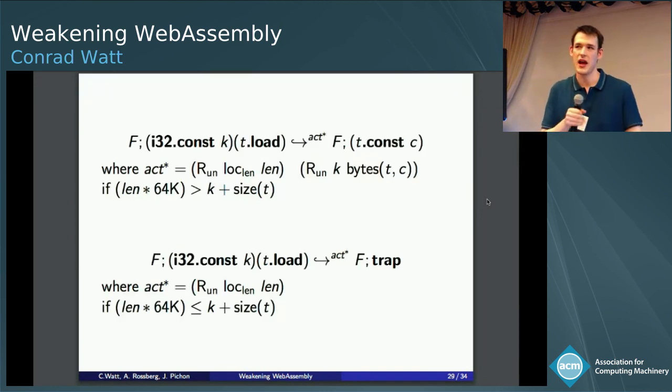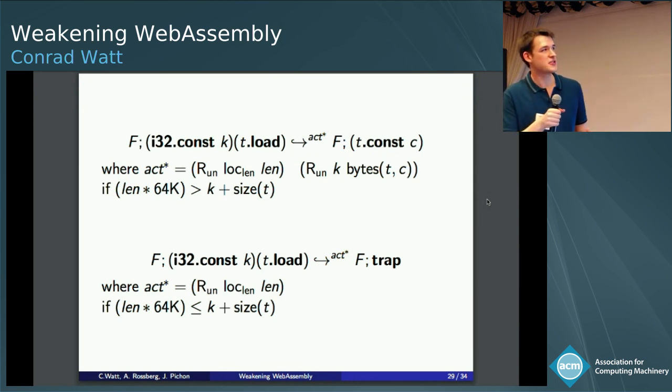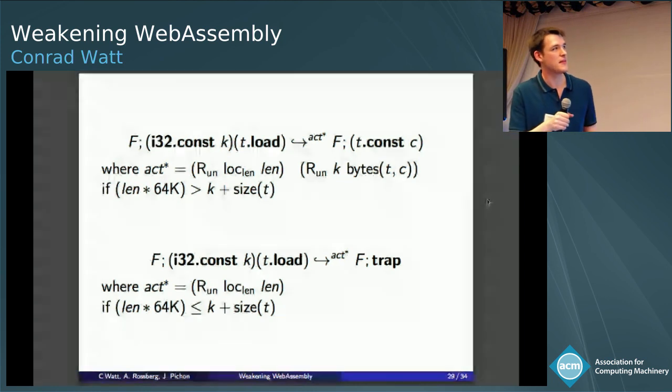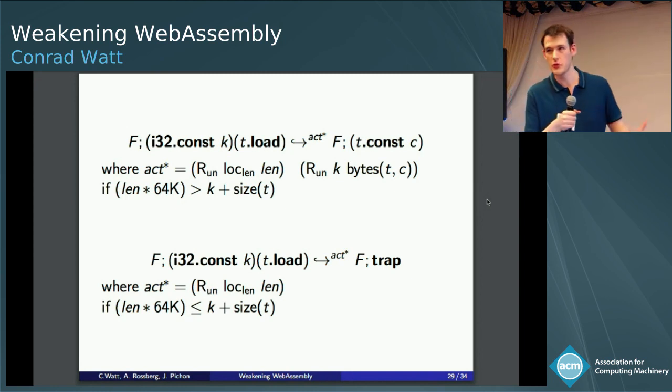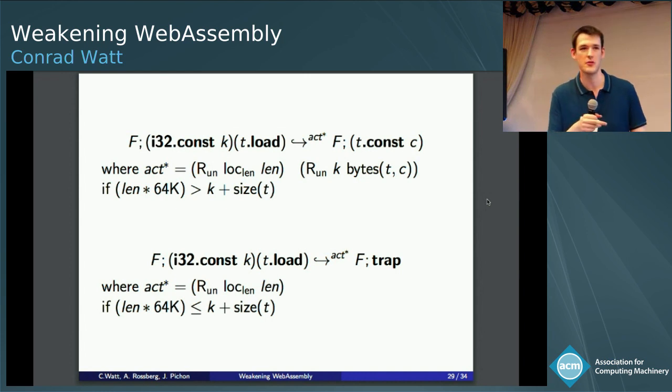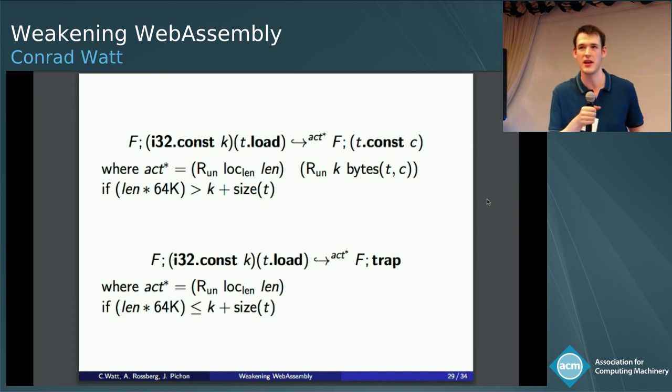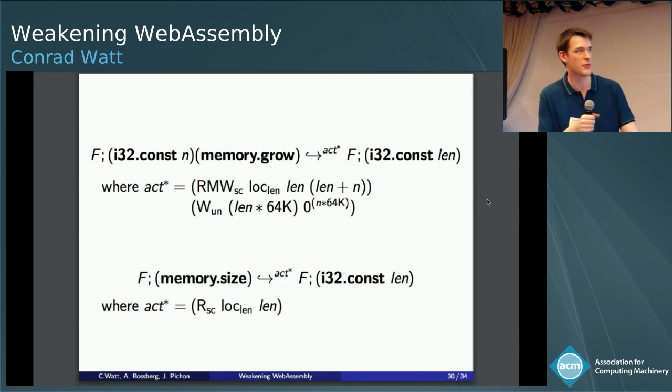So as I said, this kind of gives us an intuition for how we want to model this. In the full spec, instead of just saying, I'm emitting an action that describes how I access data, every memory access also has to emit an action describing how it accesses the length. And that has to be not sequentially consistent. So we just make it an unordered consistency, because that's the other consistency mode we get for free with the model. So you'll notice here that our load is now deciding whether it traps or not based on whether it observes a length of a sufficient size from this distinguished length location that we have abstractly in the model. And memory growth itself is modeled as a sequentially consistent RMW on this distinguished location.